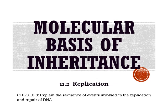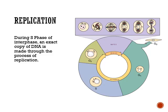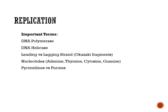We've gone over the basic structure of DNA. Now we're going to talk about replication. I want you to be able to explain the sequence of events involved in the replication and repair of DNA. Replication occurs during S phase, or synthesis phase, of interphase — an exact copy of DNA is made. Key terms to know: DNA polymerase, DNA helicase, the leading strand, the lagging strand, nucleotides including adenine, thymine, cytosine, and guanine.